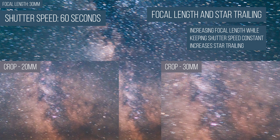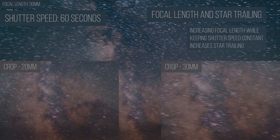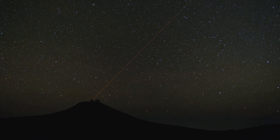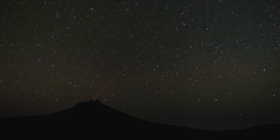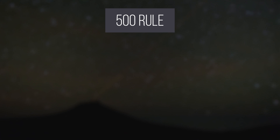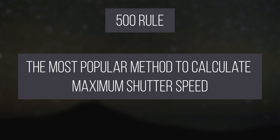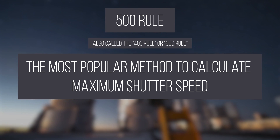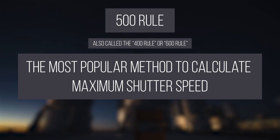The calculation for this maximum shutter speed to retain sharp stars can be found a number of ways. You may have heard of something called the 500 rule — a common rule of thumb to calculate your maximum shutter speed. You may have also heard it called the 400 rule or 600 rule.